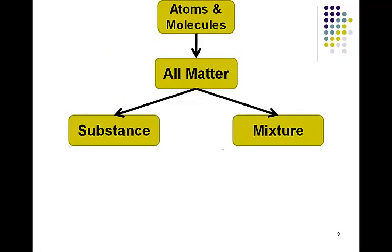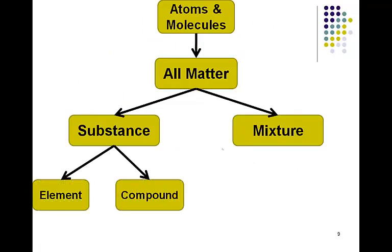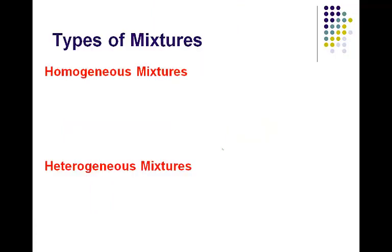Our types of substances are elements and compounds. Let's consider mixtures now. A mixture is a combination of substances. Each substance retains its chemical properties when we put them together. And we have two major types of mixtures.